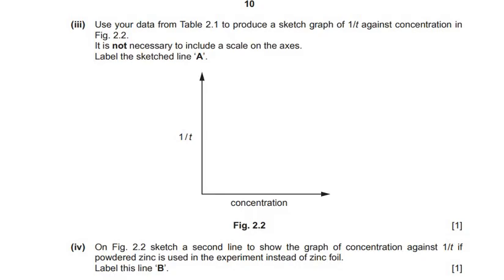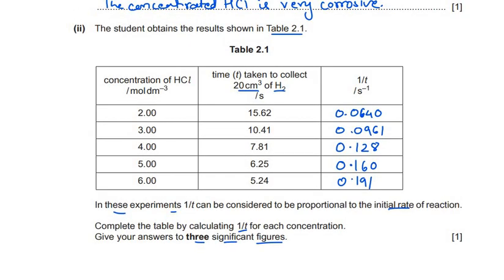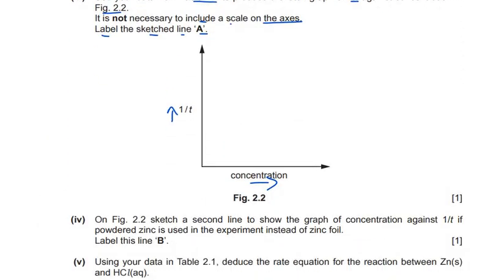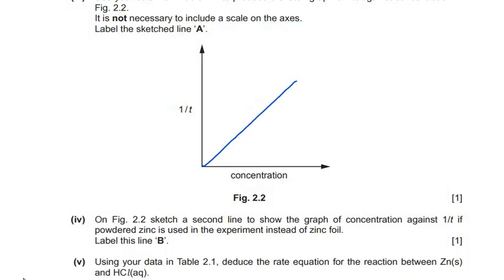Use the data from table 2.1 to produce a sketch graph of 1/T against concentration in figure 2.2. The concentration is on the x-axis and 1/T on the y-axis. A scale is not necessary. As concentration increases, the value of 1/T also increases at a steady rate, so we draw a straight line and label it A.